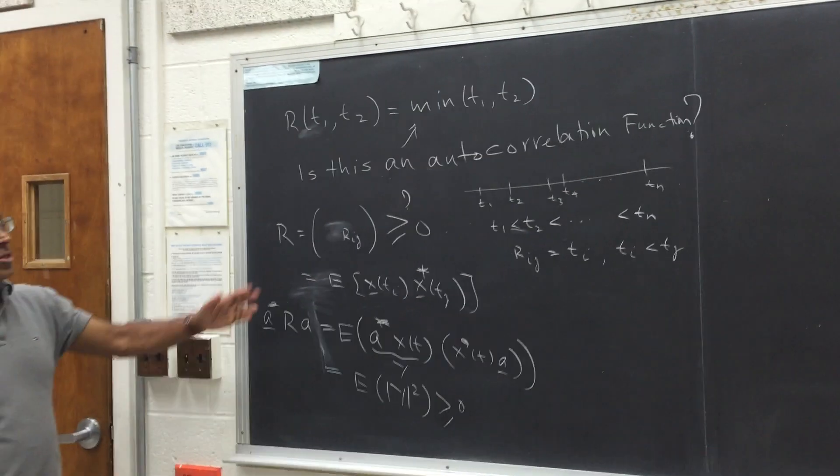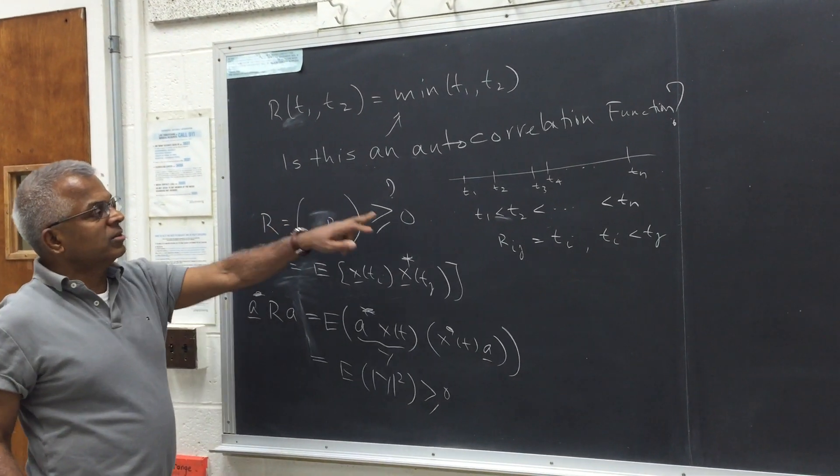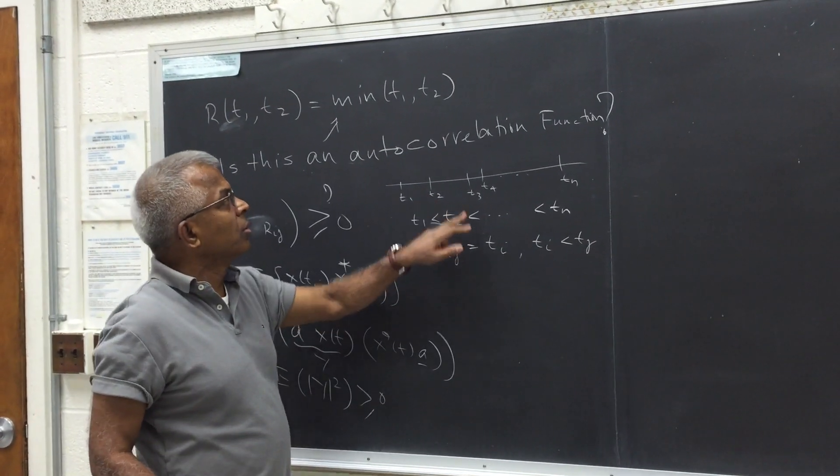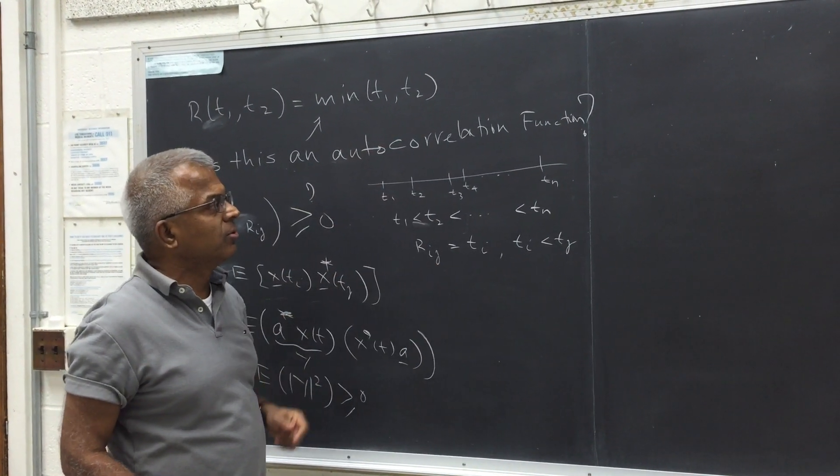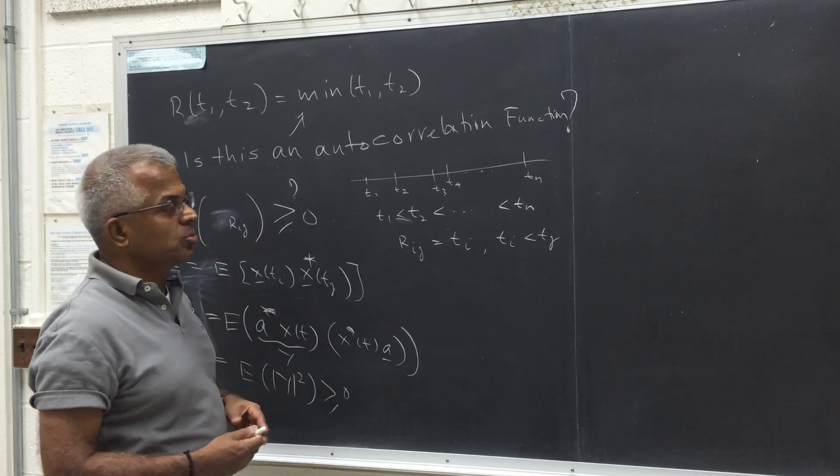So that's true. So the question is, if you create an r with rij equal to minimum of t1, t2, does it satisfy this property?